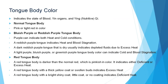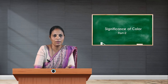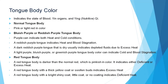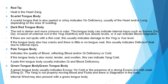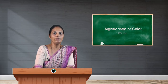A red tongue body is darker than the normal red. A very dark red indicates deficient or excess heat or deficiency of yin. A red tongue with a yellow coat or swelling also indicates excess heat. We have to note the color, texture, and structure together. A red tongue body with a bright shiny coat, very little coat, or no coating again indicates deficiency of heat.